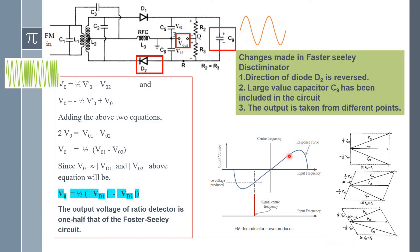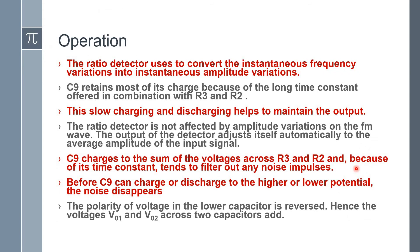We can achieve an S-shape curve — the characteristics for the FM ratio detector also. This ratio detector is also called a phase discriminator, so that's why the phasor diagrams are represented here to explain the ratio detector. This entire phasor representation of the Foster-Seeley discriminator and ratio detector will be explained in detail in the corresponding Foster-Seeley discriminator section, and now we are going to move towards the operation of the ratio detector.